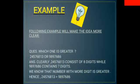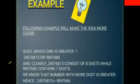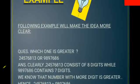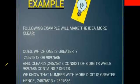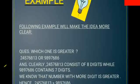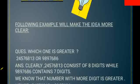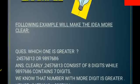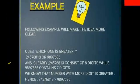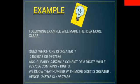I have taken some examples to show which number is greater. Here I have taken an eight digit number and a seven digit number. First of all we count the number of digits. First number contains eight digits and second number contains seven digits, therefore the number which contains eight digits is greater.